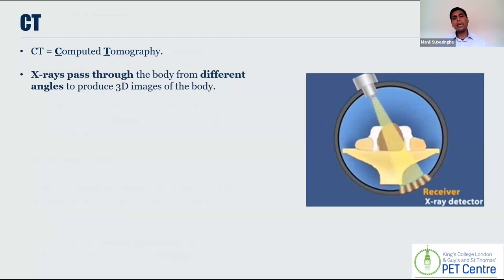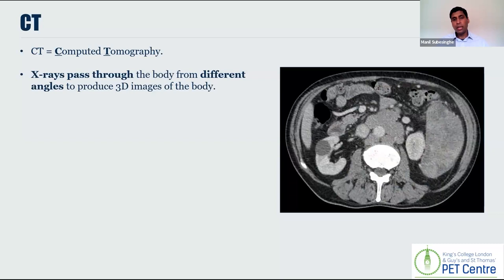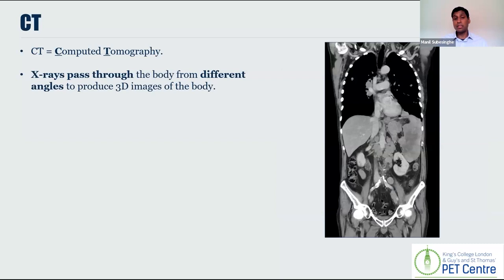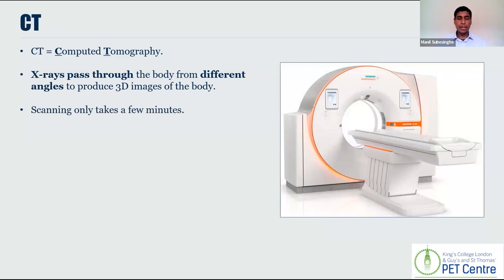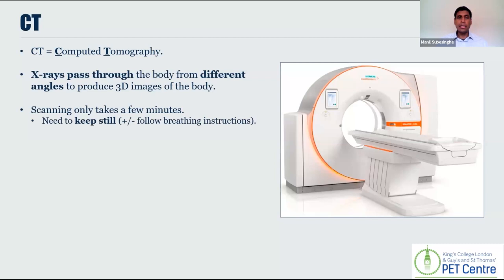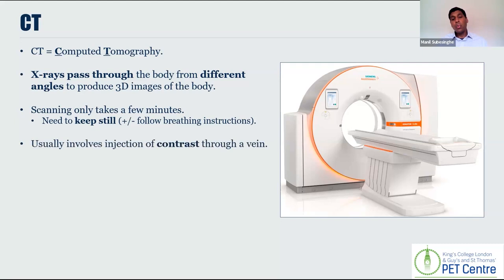Moving on to cross-sectional imaging modalities, let's talk about CT — computed tomography. This involves sending a set of x-rays through the human body not through one direction but through multiple directions, creating detailed images that we can view in multiple planes. This is what a CT scanner looks like — it looks like a donut or a polo mint. Scanning takes a few minutes on average. The key principle for most of these techniques is to keep still, and you may have to follow some breathing instructions. If you move whilst having a scan, the image becomes blurred and it can be very difficult to give you the right answers.